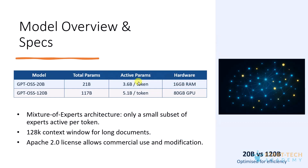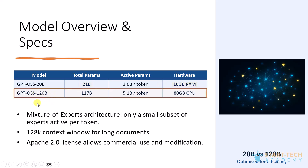GPT-OSS is a family of two models: GPT-OSS 20 billion and GPT-OSS 120 billion. The 20 billion model has about 21 billion parameters optimized for efficiency and is able to run on low-end devices with around 60 GB of RAM as a minimum requirement. The larger GPT-OSS 120 billion has 117 billion parameters and is closer to state-of-the-art reasoning models, designed for a single high-end GPU with around 80 GB of VRAM required.